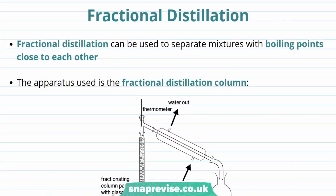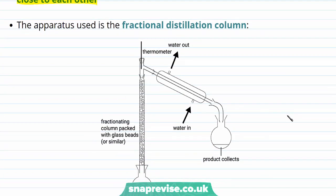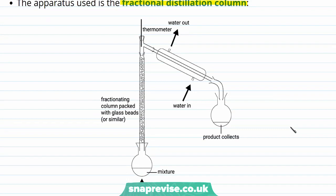Fractional distillation is an improved method of distillation that can be used to separate mixtures with boiling points closer to each other. The extra piece of equipment used in fractional distillation compared to simple distillation is known as a fractional distillation column, as you can see in this diagram. Again, the mixture starts in a flask and the product collects on the other side after travelling through a condenser, which is kept cool by the action of flowing water. A thermometer at the top of the column helps you figure out what temperature has been reached.